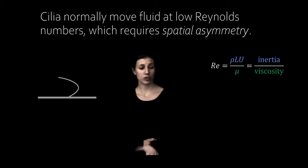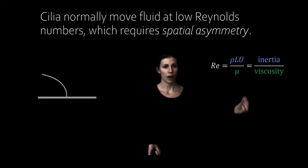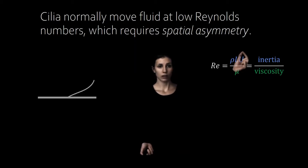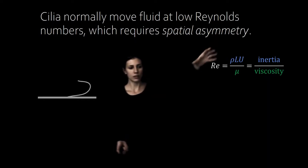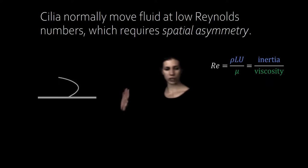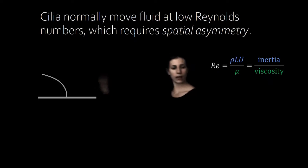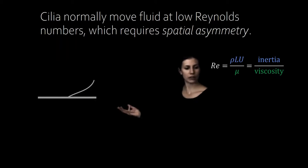A common approach to moving fluid at low Reynolds numbers, that is scenarios with high fluid viscosity, low velocity or small size, is to use cilia which is a flexible organelle that moves in a whip-like motion. The motion has a power stroke which pushes fluid to the left and a recovery stroke which moves it back to the starting point.